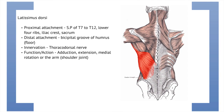Let's start with the latissimus dorsi muscle. Its proximal attachment is the spinous processes of T7 to T12, as well as the lower four ribs, iliac crest and the sacrum. There are different parts of this muscle, so just be aware of that. Its distal attachment is the floor of the bicipital groove of the humerus.